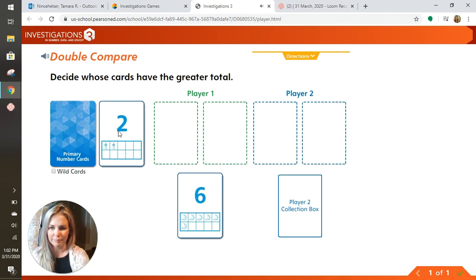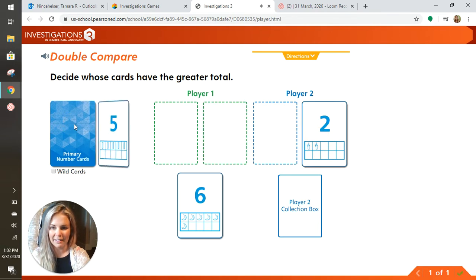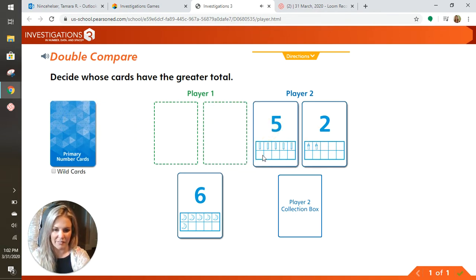Round player two. Got a two and a five. So I have one, two, three, four, five, six, seven. Let's see what you get.